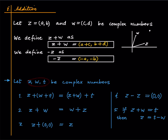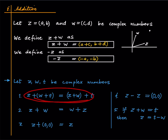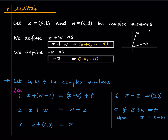Suppose Z, W, and T are three complex numbers. Then Z plus (W plus T) equals (Z plus W) plus T — here we add W and T first and then add Z, and here we add Z and W first and then add T. The two things are equal, and that is very easy to check. This is called associativity of addition of complex numbers, and it is just like what happens in real numbers. The second property says that whether you add Z and W in one order or the other, it is the same thing. This is called commutativity.